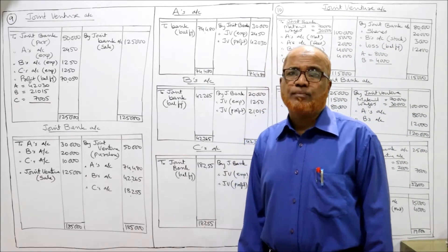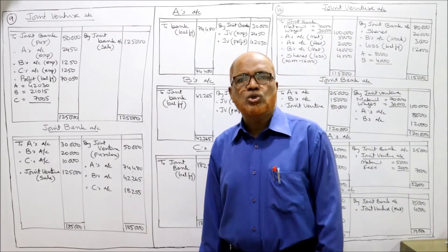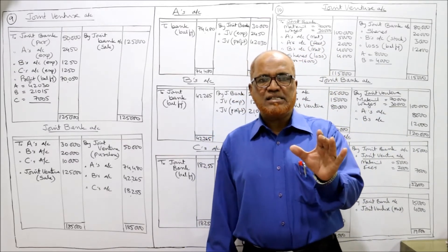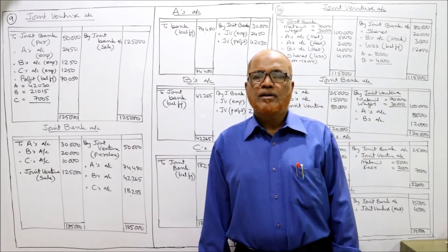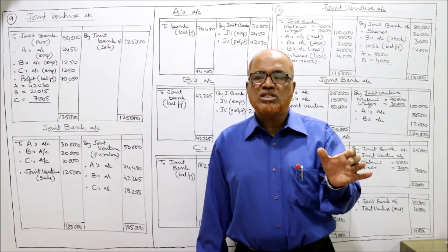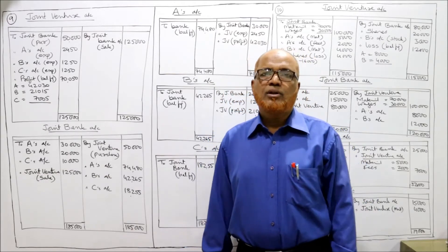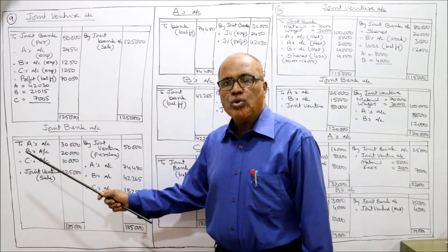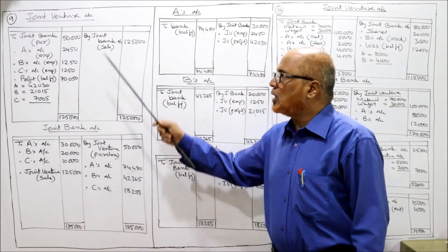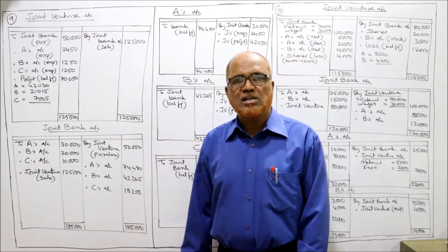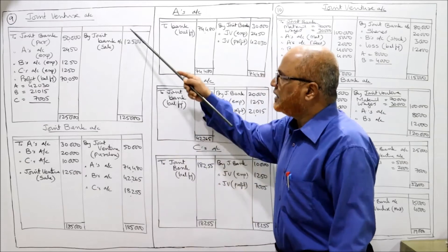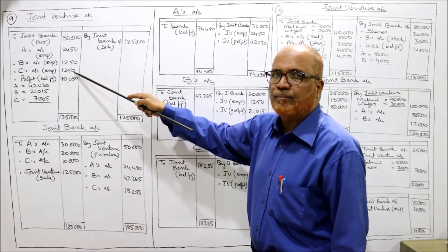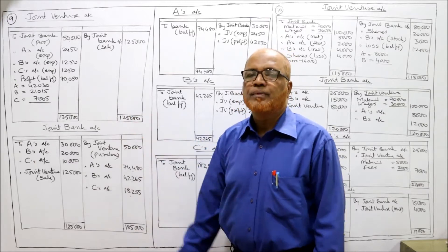Now the profit on joint venture - all the transactions are over. Now we will find out whether there is profit or loss. All the machines are sold for Rs. 1,25,000. The entry for sale is joint bank account debit to joint venture account. Expenses will be debited to joint venture and incomes will be credited to joint venture. So joint bank account debit to joint venture, sale Rs. 1,25,000. Credit side 1,25,000 minus 50,000 minus 2,450 minus 1,250 minus 1,250. The profit - balancing figure - is Rs. 70,050.